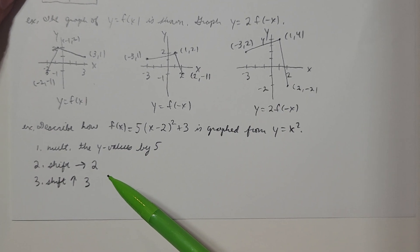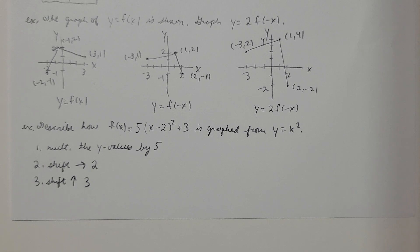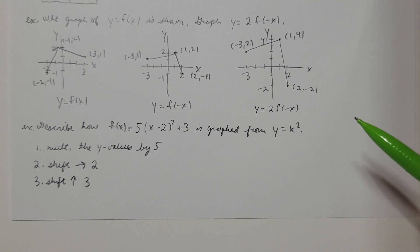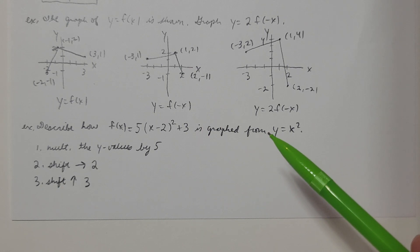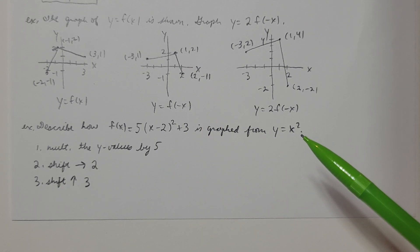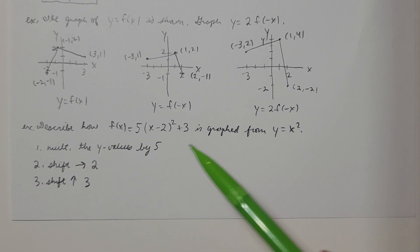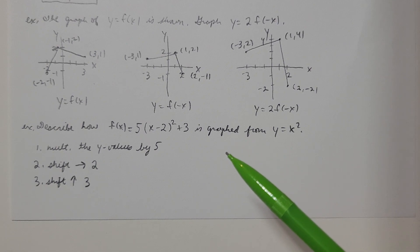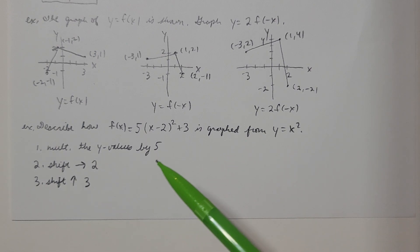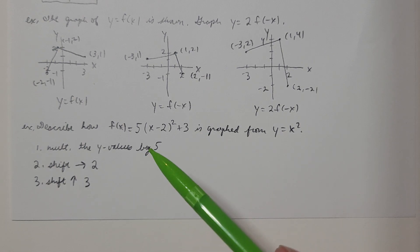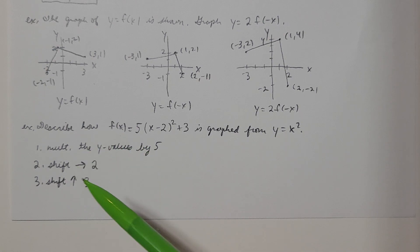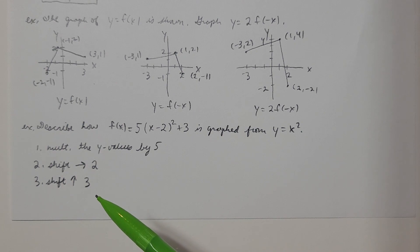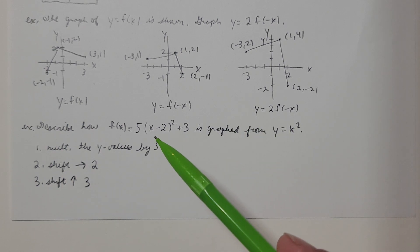Here's another example: describe how f(x) = 5(x-2)² + 3 is graphed from y = x². First, y = 5x² means I multiply all y-values by 5. Then replacing x with x-2 shifts the graph right two units. Finally, plus three means shifting up three units. Applying these transformations in that order to the curve gives me the graph of f(x).